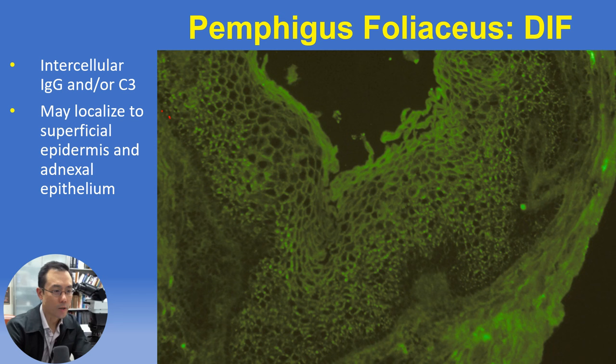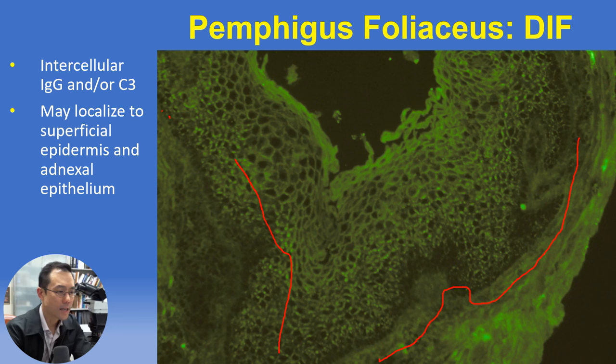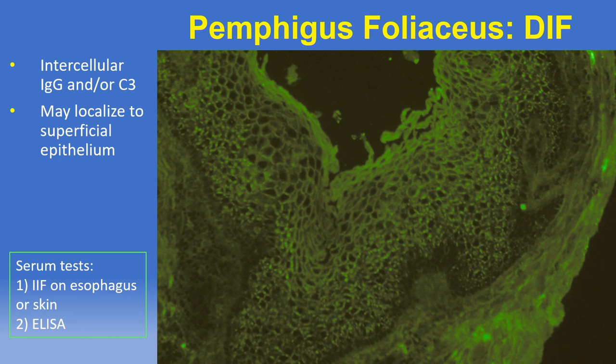Back to pemphigus foliaceus — the characteristic staining pattern on DIF testing is an intercellular or cell surface epidermal staining pattern, typically with IgG and/or C3. The staining may localize to the superficial epidermis, relatively sparing the basal layer, with variable intercellular cell surface staining resembling chicken wire — a phrase often used to describe the pemphigus staining pattern. When you see that superficial distribution you can suggest pemphigus foliaceus, though correlation with lesional histopathologic and clinical features is required, and serum testing by indirect immunofluorescence or ELISA for specific targets can supplement or confirm the diagnosis.